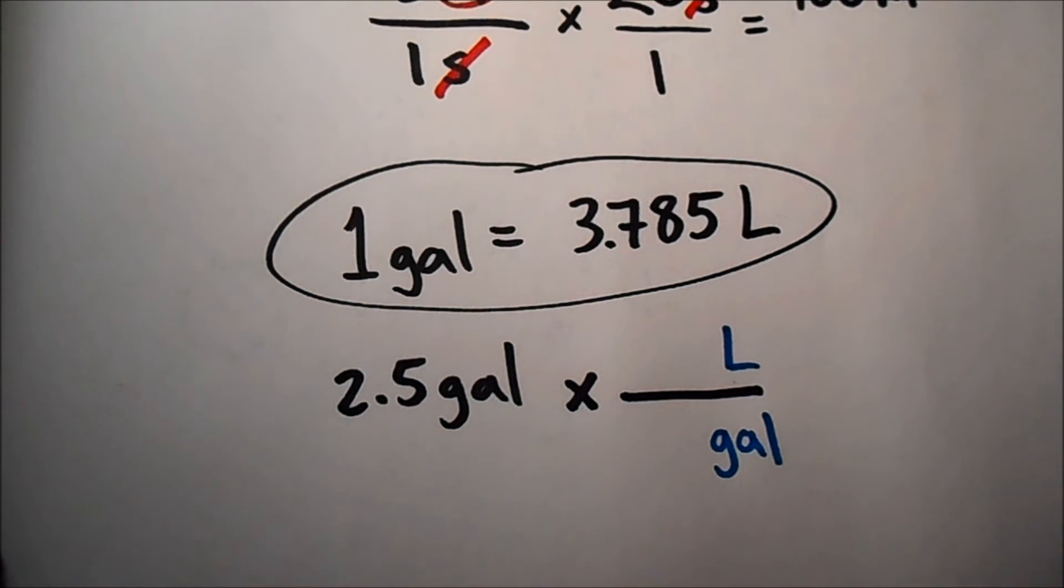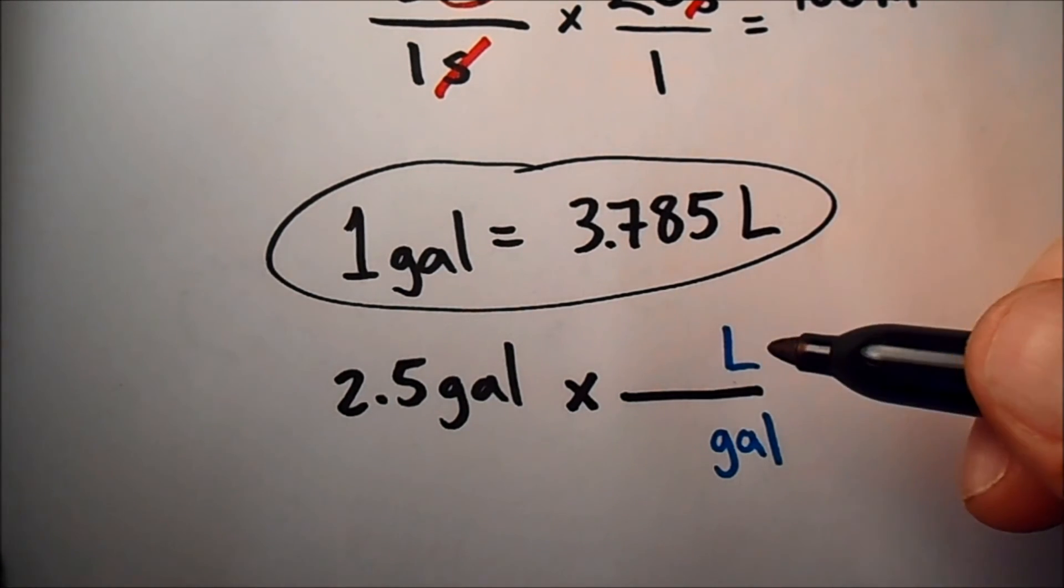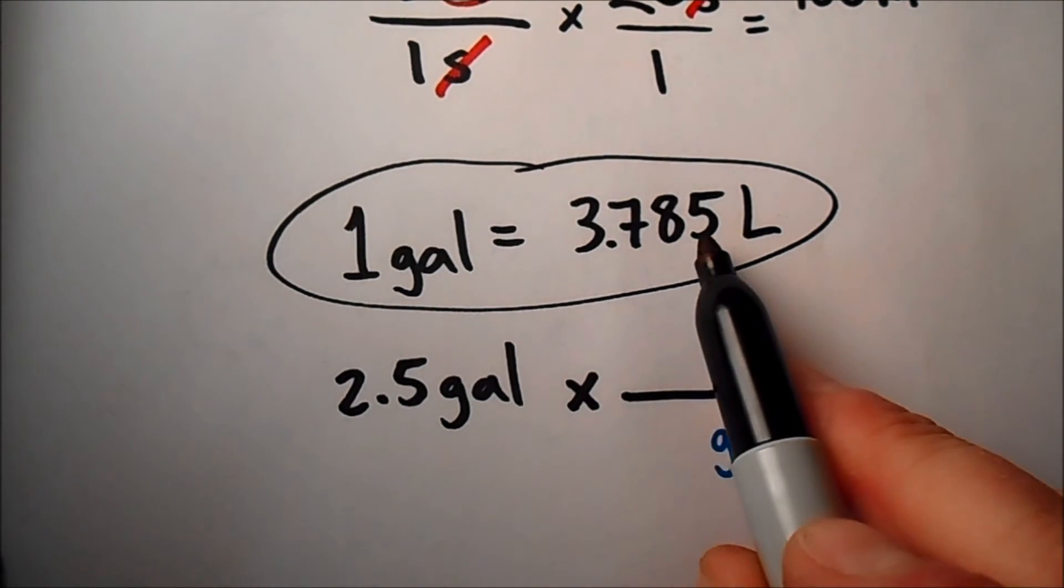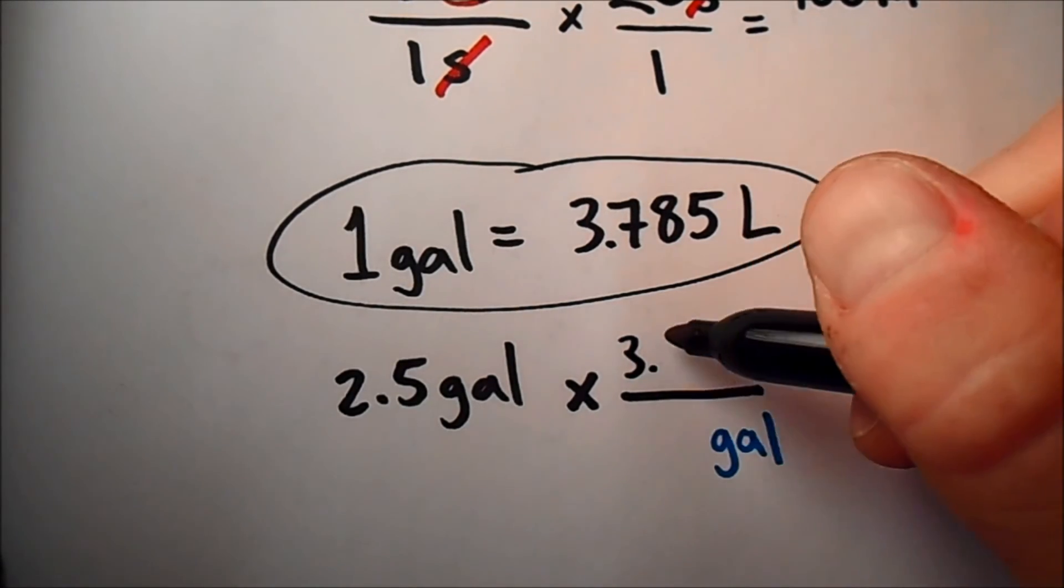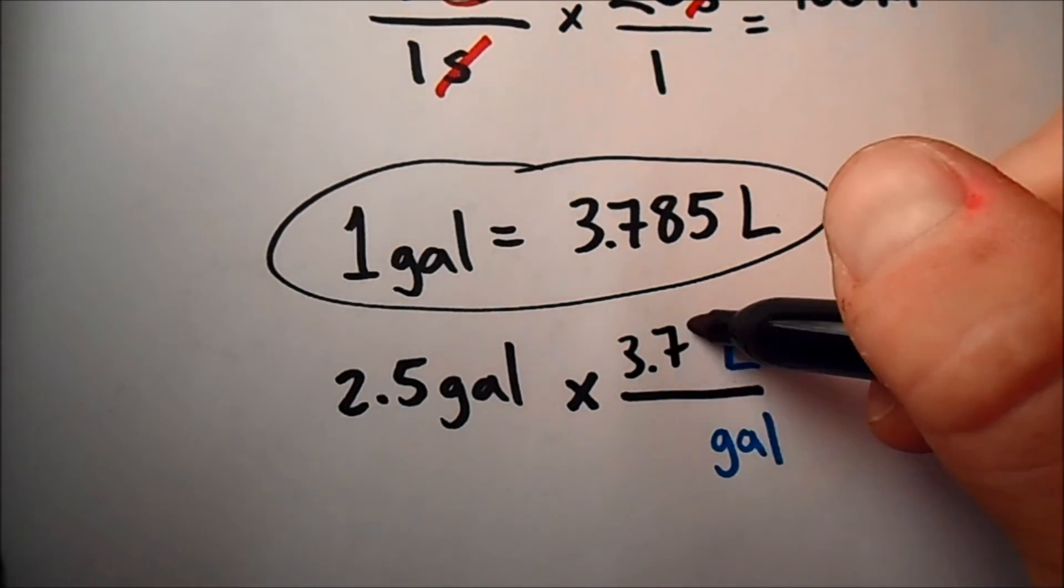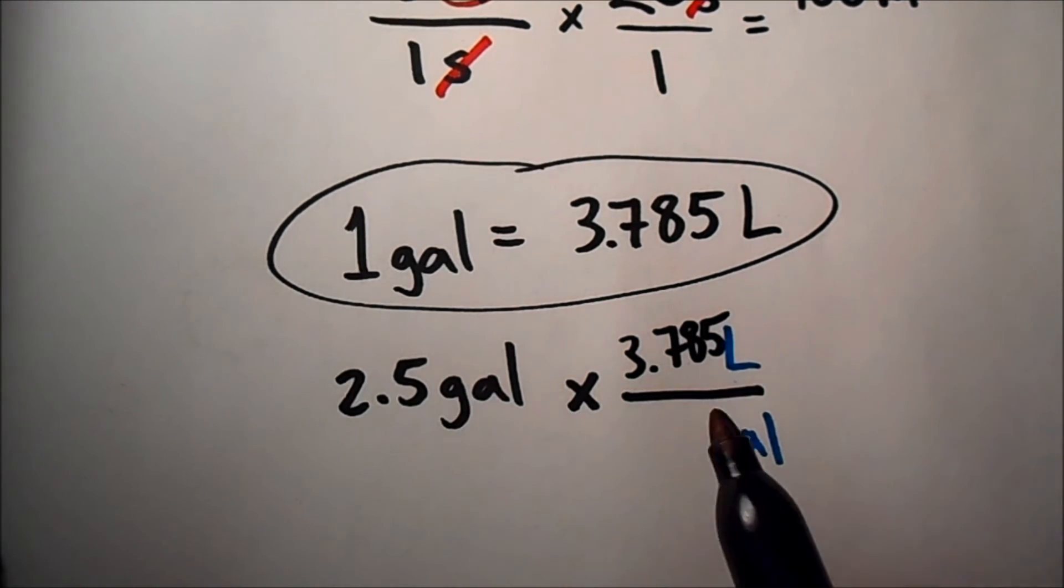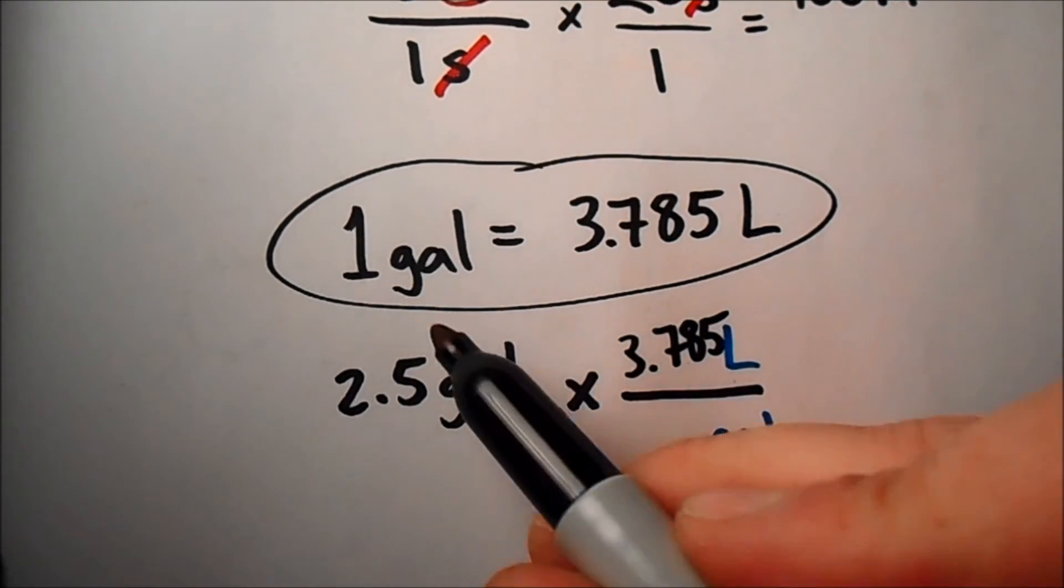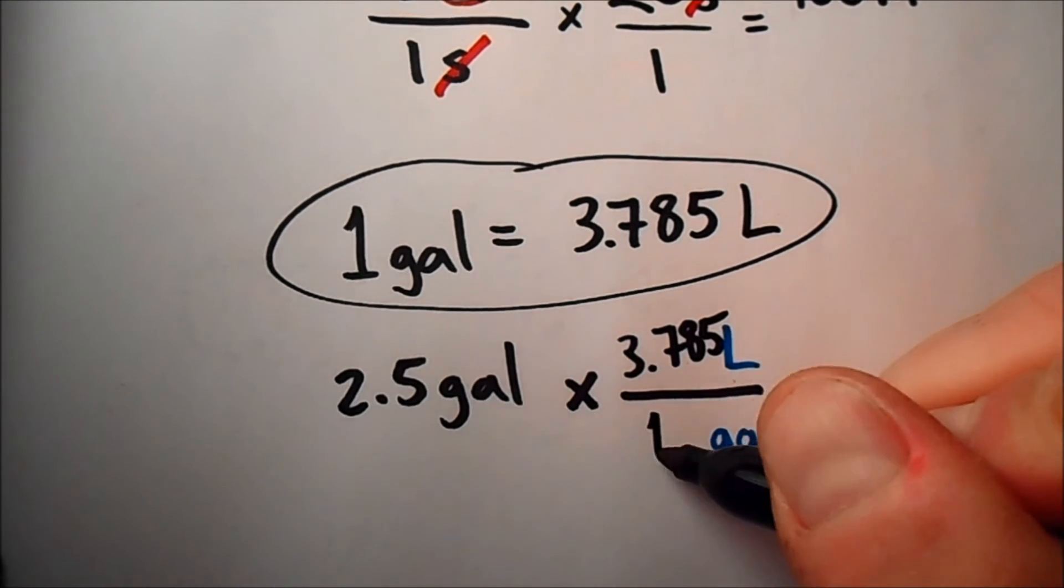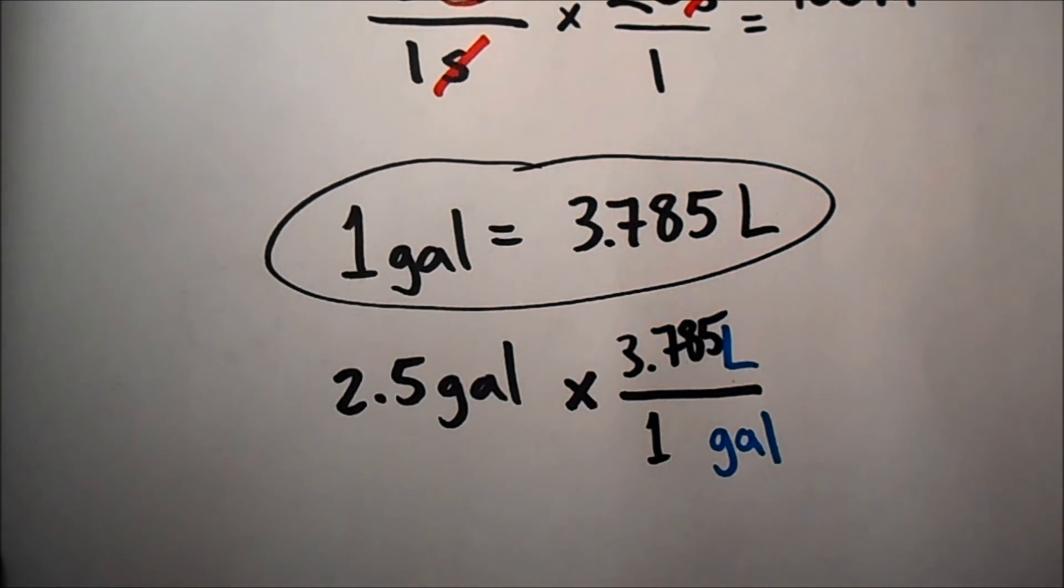Now that I've got my units in place, I can then put the numbers with them. 3.785 goes here next to the liters. The numbers never change which units they're with from the conversion factor when you put them in the problem. My 1 goes with gallons. 1 gallon is equal to 3.785 liters, and then I'm going to multiply it.